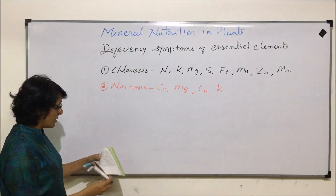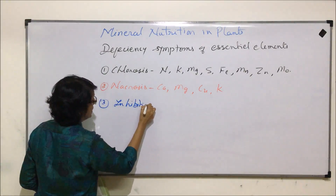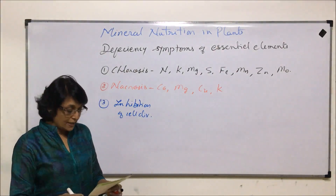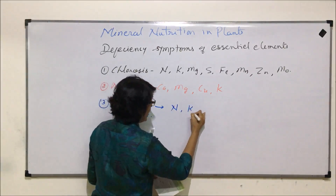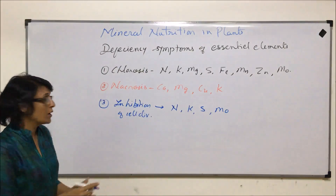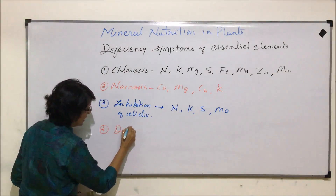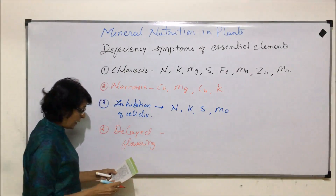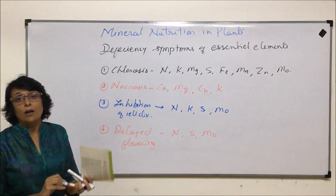The third general symptom is inhibition of cell division. If cell division and growth are affected, the responsible element deficiencies are nitrogen, potassium, sulfur, and molybdenum. The fourth symptom is delayed flowering, which is caused by deficiency of nitrogen, sulfur, and molybdenum.